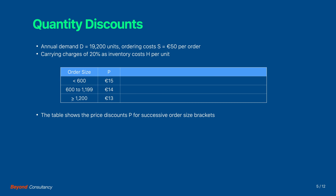As a starting point, the table shows the price discounts P for successive order size brackets. For an order size less than 600 units, the purchase price is 15 Euro. If the order size is between 600 and 1199 units, the price drops to 14 Euro. Once the order size is equal to or greater than 1200 units, the unit price becomes 13 Euro.